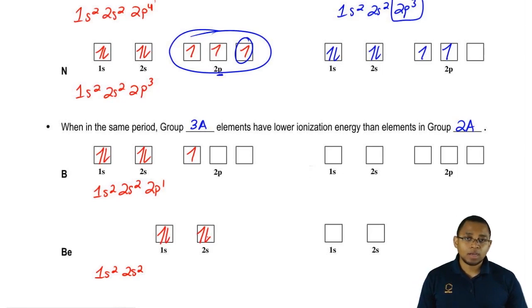We want to take off an electron using ionization energy. We take off the electron that was added last. We would be removing this electron from boron, leaving us with one down, one up, one down, one up, one down.